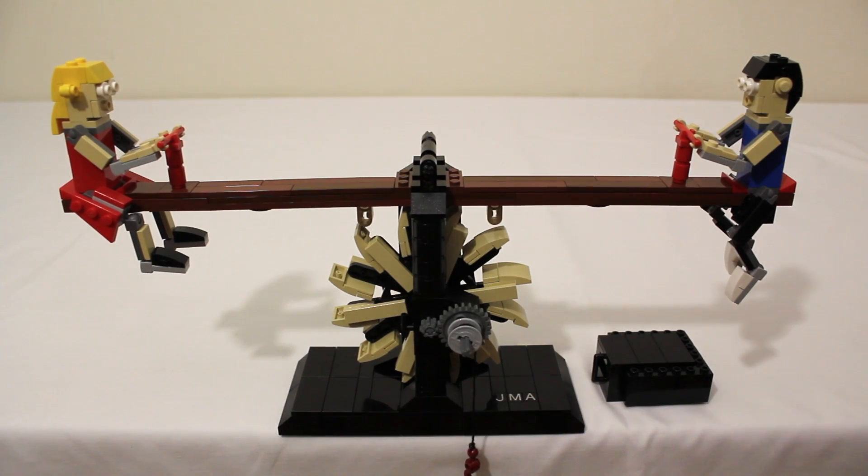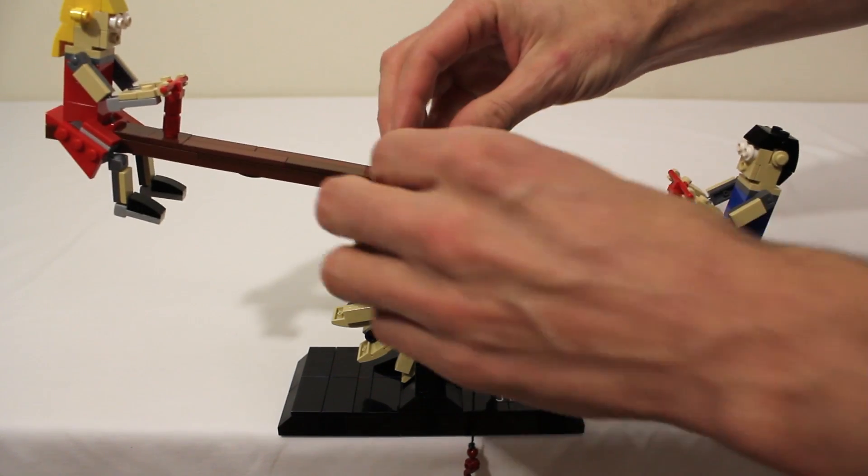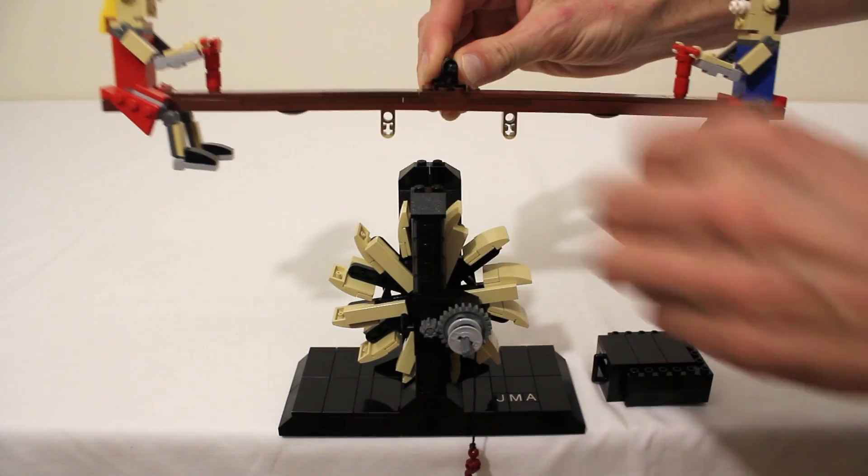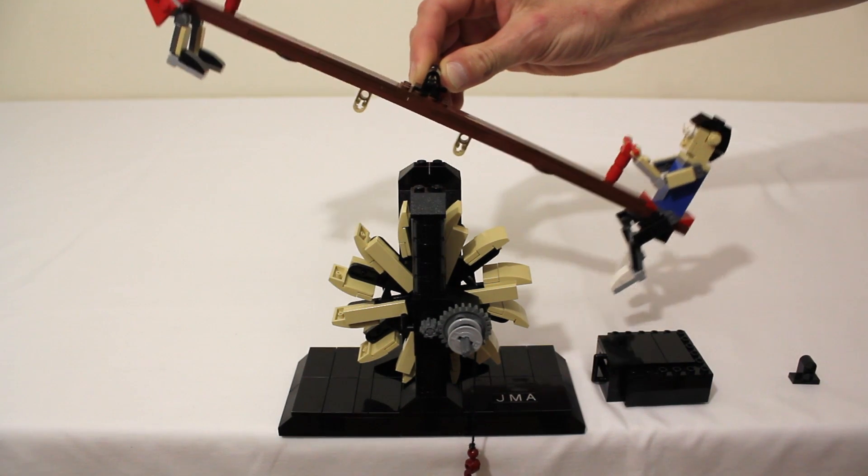One of the first things you might notice about this model is that there is no obvious hanging pendulum. That is because I'm using the seesaw itself as the pendulum. If I take it off the base, you can see that when I displace it, it will swing back and forth.